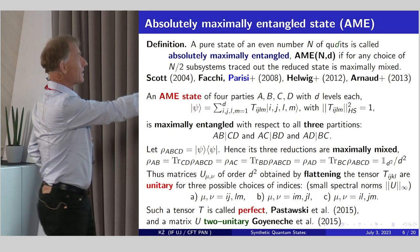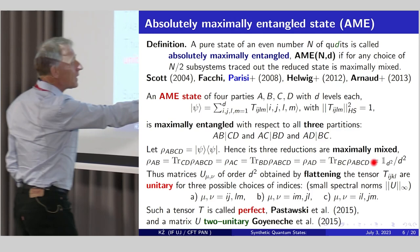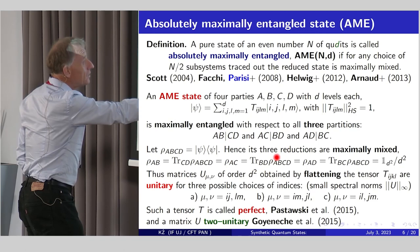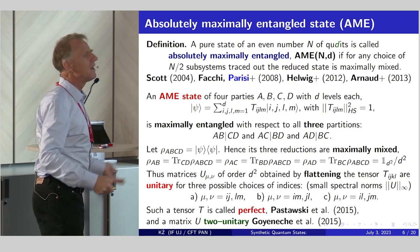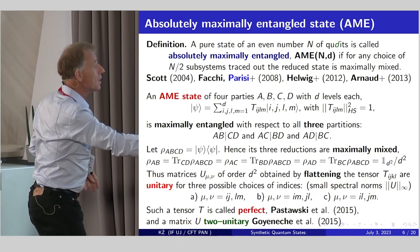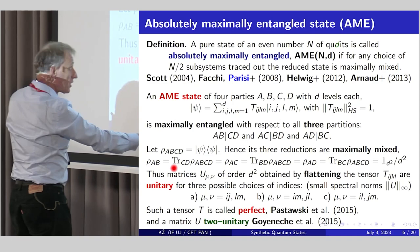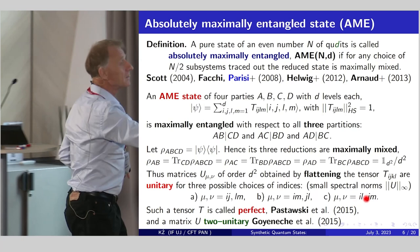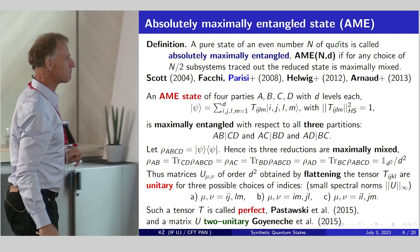The definition is simple. It's 20 years old. We say that such a state of four parties with d levels each is described by a tensor with four indices. It's called absolutely maximally entangled. And for any choice of, in this case, n is four, so two subsystems, the partial trace is maximally mixed. So if you take such a state psi, partial trace with respect to ab is maximally mixed, 1 over d squared, equal to partial trace over bd, equal to partial trace over bc.